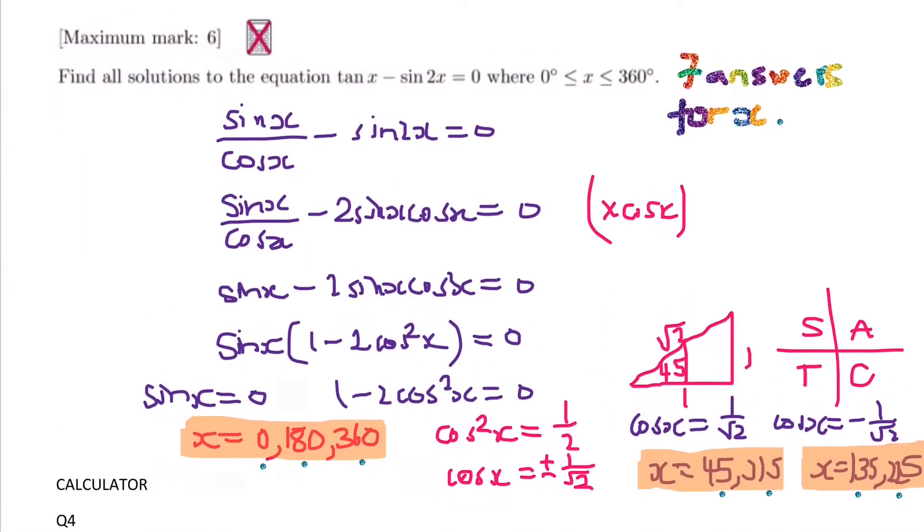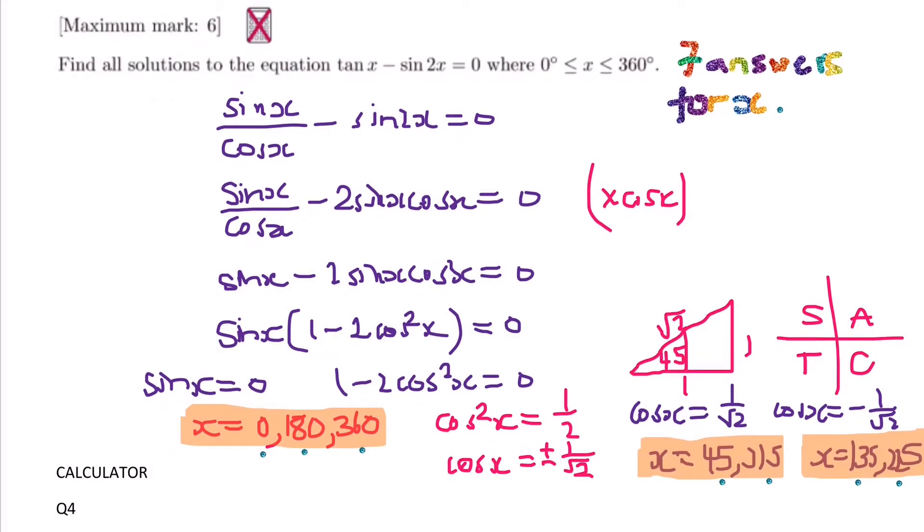On to the trig equation. You can see I was looking for 7 answers. So 6 mark question, no calculator. I was looking for 7 answers. So if you multiplied the whole equation by cos x, but before that, to pick up some easy marks, you just had to change tan x into sin x over cos x, and you just had to change sin 2x into 2 sin x cos x. So these were easy marks to pick up at the beginning.